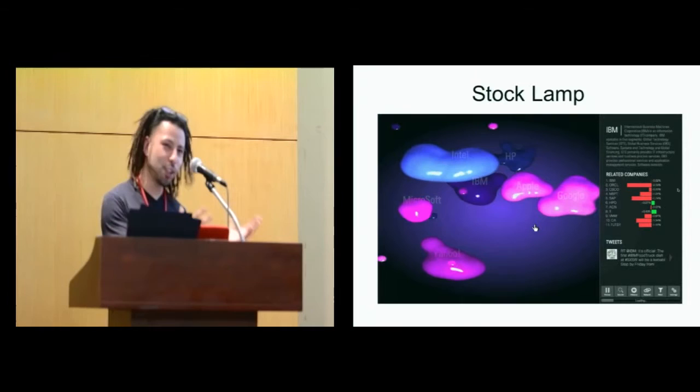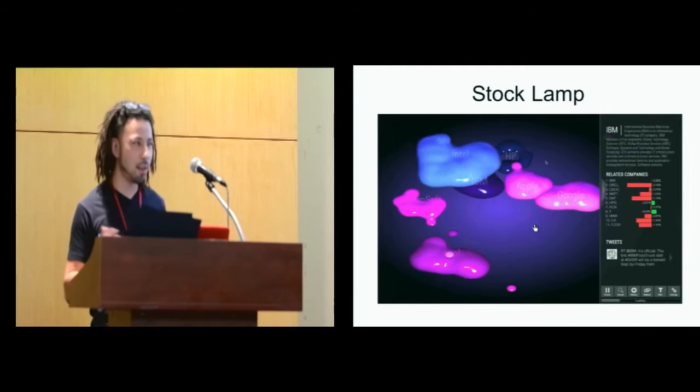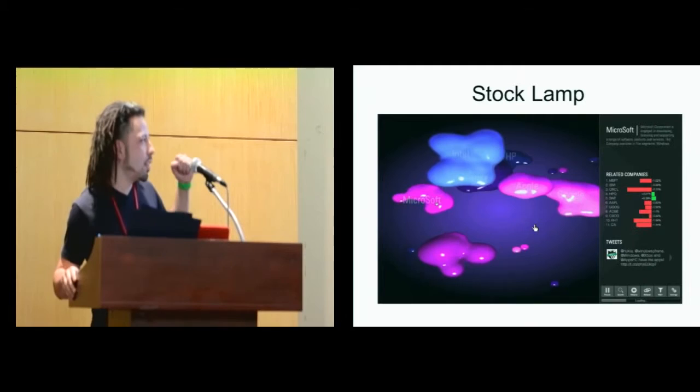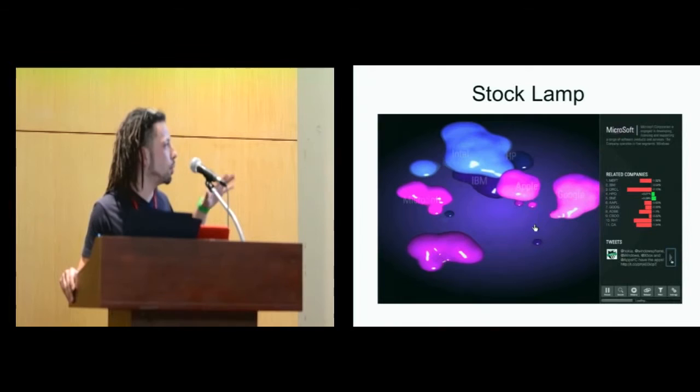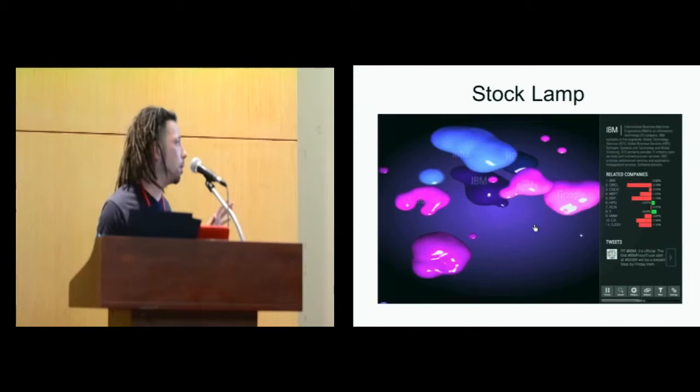So this is Stocklamp. You can see it, it looks like a lava lamp, that's hence the name of Stocklamp. There's bubbles that represent companies. We have seven companies: Intel, Microsoft, Yahoo, Google, all the tech companies that you might recognize. And they're representing the stock value at that time, the market information.